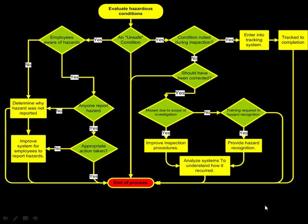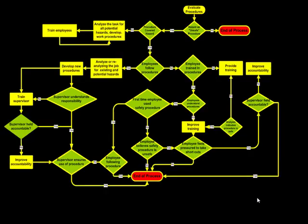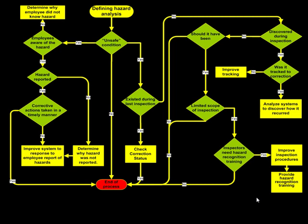In Chapter 3, there are three flowcharts for consideration. This flowchart will aid you in the evaluation of hazardous conditions. This particular flowchart will aid in the evaluation of procedures from which those hazardous conditions developed. And finally, the defining of the hazard through analysis is covered in this flowchart. All of these are found in Chapter 3.